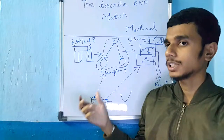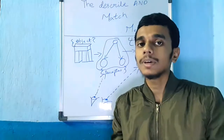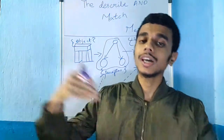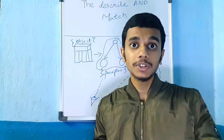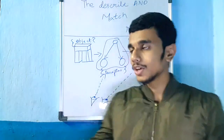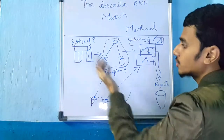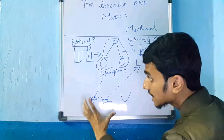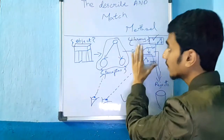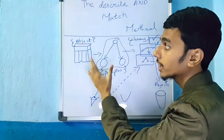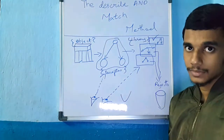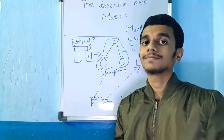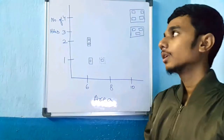So what is describe and match? We are first describing the object, and after that we are searching for that object description in our library description. We see the object, get its description, check it against the library description, and conclude with what we have found.